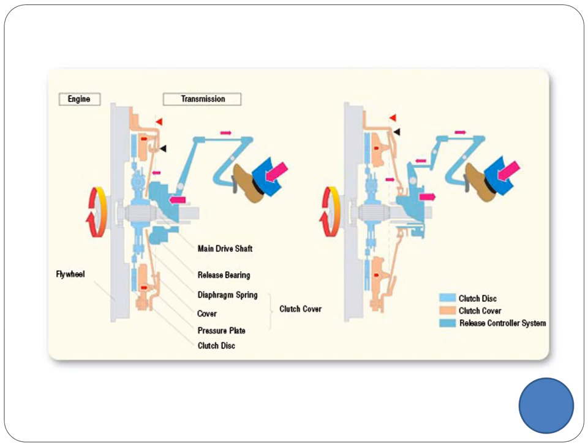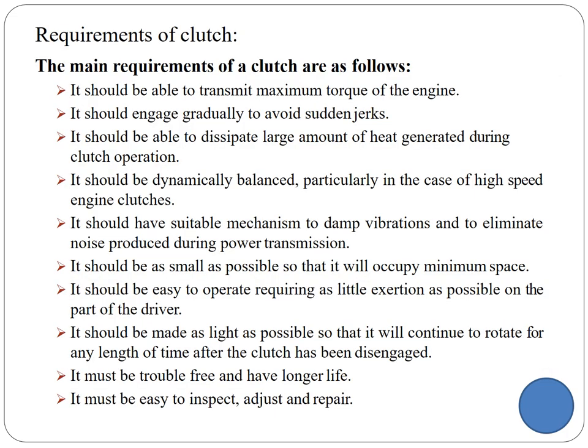If you press the pedal, pressure is applied on the bearings. The release bearing presses the diaphragm spring. If you press the diaphragm spring, the pressure plate is released from the clutch disc. If the pressure plate is released, the clutch plate is released from the flywheel. When released, the engine shaft and transmission input shaft will run freely without the clutch disc. Only the transmission shaft and engine shaft will run.